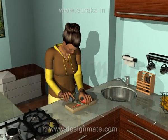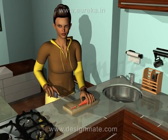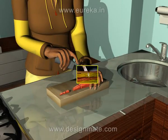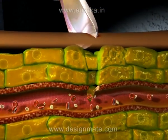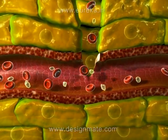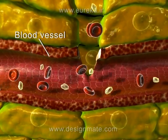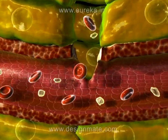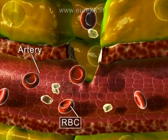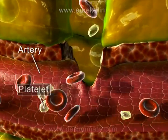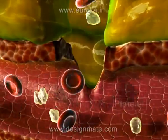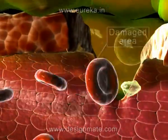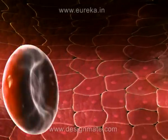If we are careless while using a knife, we might cut our finger. A zoomed-in view of the damaged area shows that the knife has ruptured a blood vessel, causing immense loss of blood. Inside the artery, we observe the RBCs and platelets, which escape out through the damaged area. The platelets play a very important role in the initiation of blood clotting.